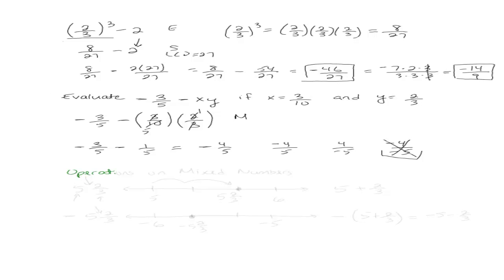This lesson is about operations on mixed numbers. Let's recall a little bit about a mixed number. Say we have 5 and 2 thirds, and we want to graph it. I know 5 and 2 thirds is between two numbers: 5 and 6. It's bigger than 5 but less than 6, because 5 is the whole number part and 2 thirds is a proper fraction, so it would be less than one more. So somewhere between 5 and 6.